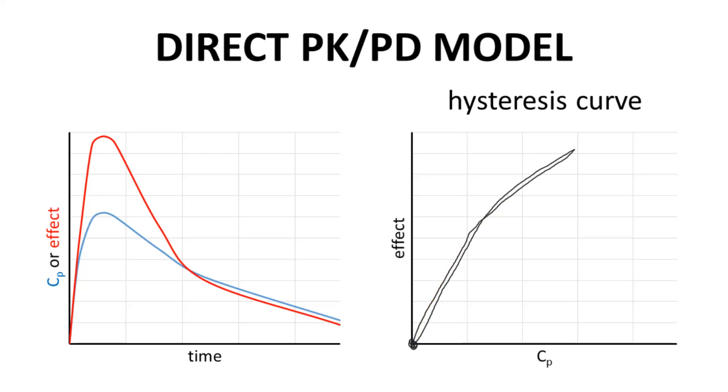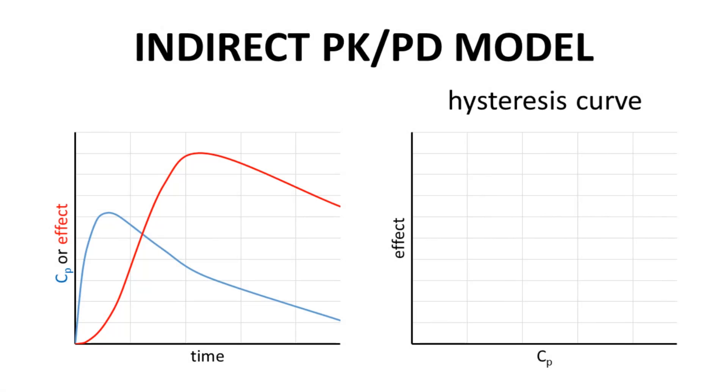Now you might think this is kind of boring and I would agree. When we go to the indirect model, it might seem more interesting. To the left is our previous representation of the indirect model. Again, our hysteresis axes are on the right.